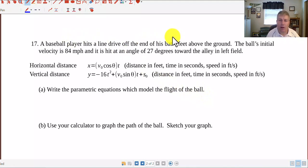So let's take a look at this particular problem. This is going to be a little bit more complicated than the last one. So we have a baseball player who hits a line drive off the end of the bat, four feet above the ground. The ball's initial velocity is 84 miles per hour, and is hit at an angle of 27 degrees, or our launch angle is 27 degrees, towards the alley and left field.